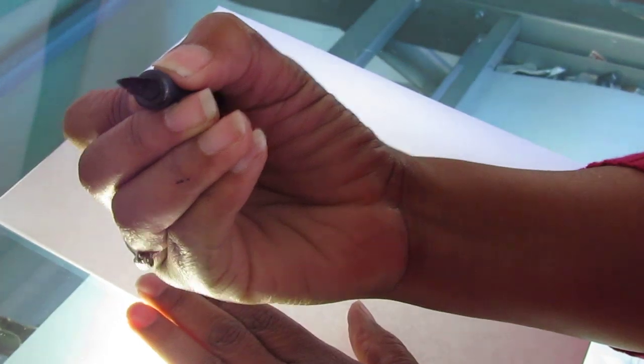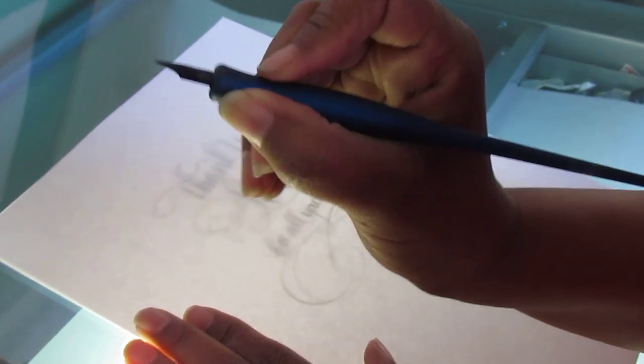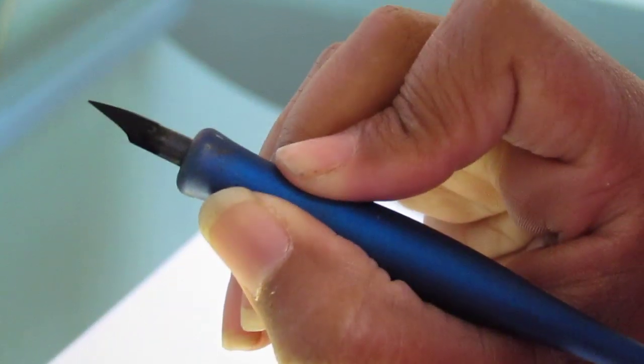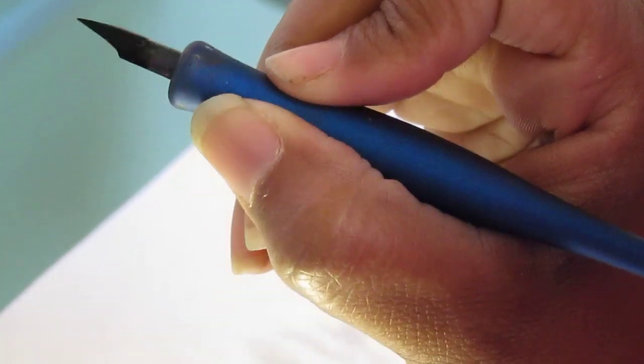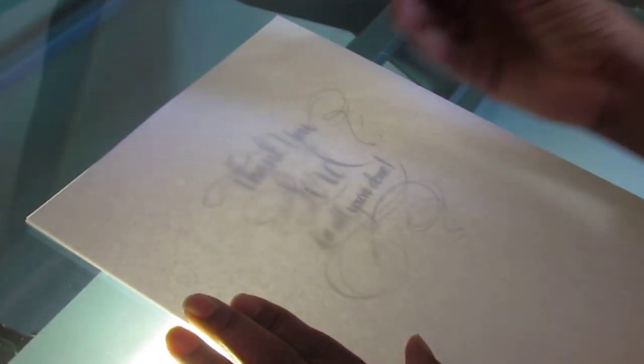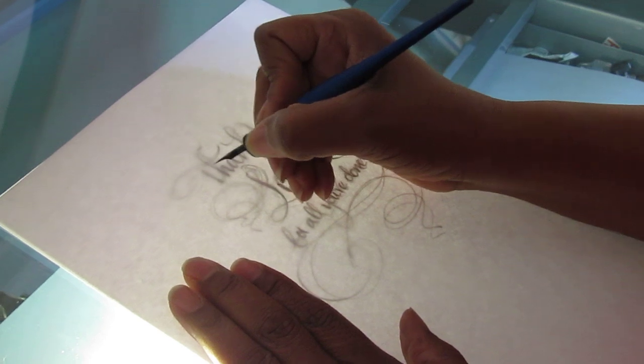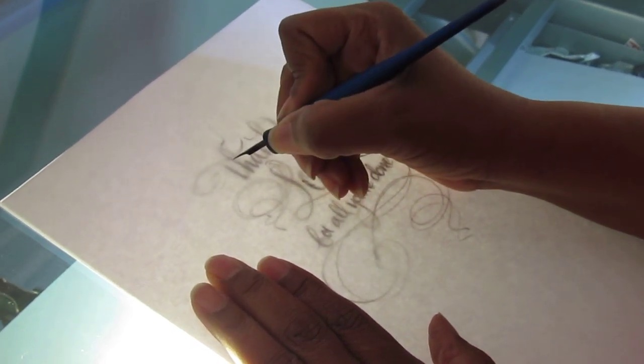So today we're gonna be writing with a pointed nib and I'm gonna use a straight holder because this is my personal lettering style. I call it a pointed pen variation so I'm gonna dip. We're gonna make this real fast so keep your eyes right on the pen and we're gonna get going.